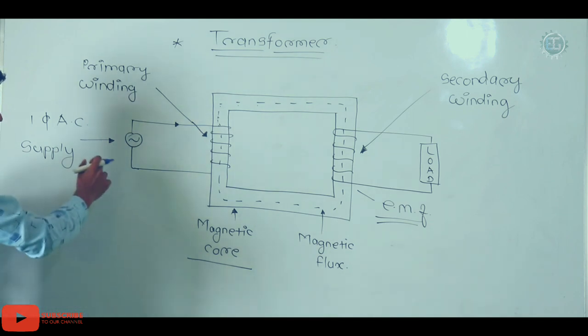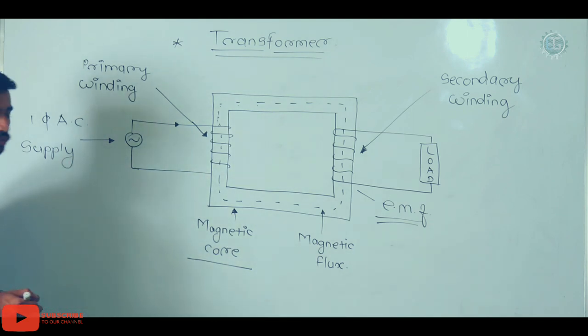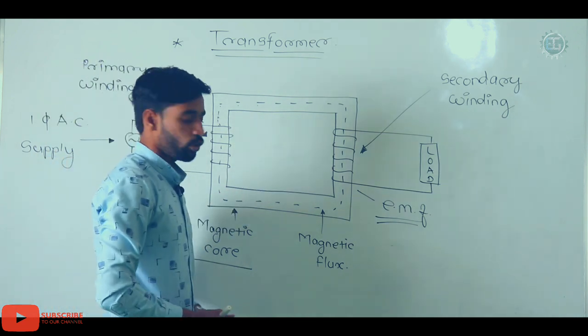The primary winding is connected to the electric supply, and the secondary winding is connected to the load. We can see the primary winding and secondary winding in this diagram.